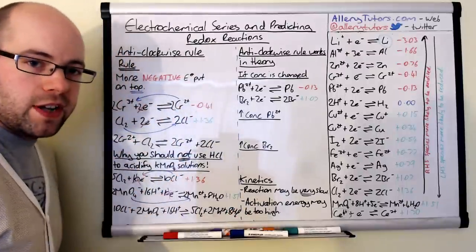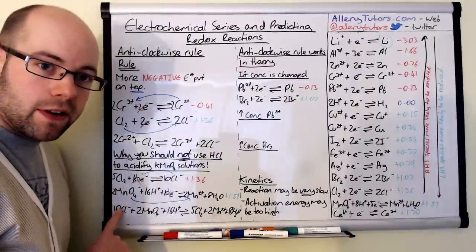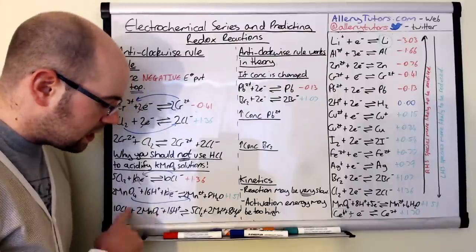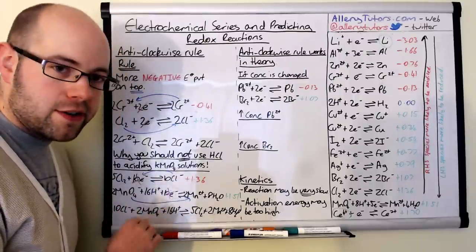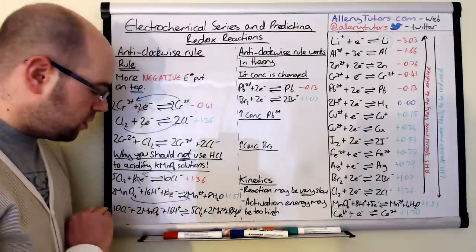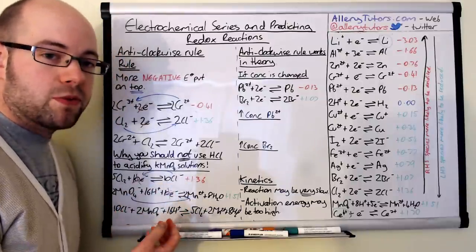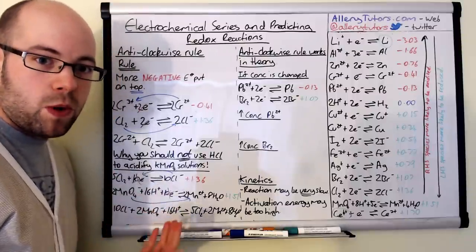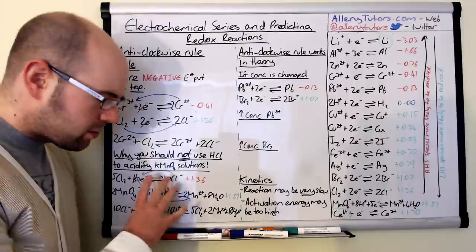As you can see from this equation, if you acidify permanganate with hydrochloric acid, the chloride ions from the acid will actually react with the manganate ions — the purple solution — and reduce them to Mn2+. This would happen in the burette before you've even started titrating, which is obviously no good. We want the contents of the conical flask to do the reducing. So you would never use hydrochloric acid for that reason. The anti-clockwise rule proves this is the feasible reaction. What you should use instead is sulfuric acid to acidify your permanganate.